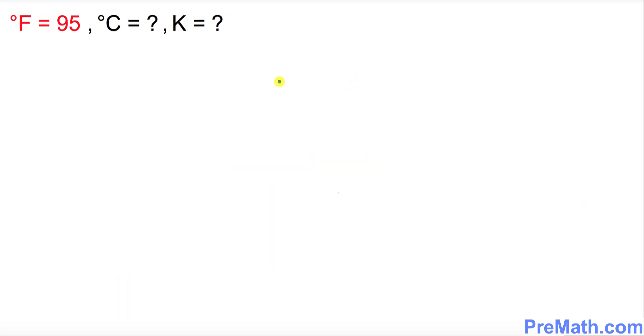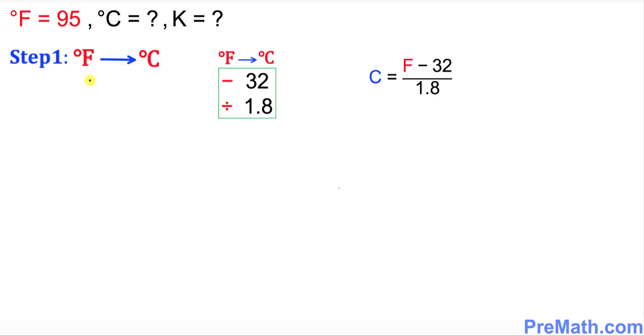In this final example, we have been given F equals 95 degrees, and we want to figure out C and K. In the very first step, we are going to convert from F to C, and this is the formula that we can use. We have been given two formulas; we will be using the first one over here. We know F equals 95. Just put down 95, and the very first step is I want you to subtract 32 from it.